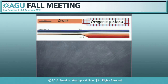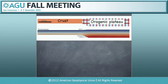Let's consider an orogenic plateau, 65 kilometers thick, adjacent to a foreland crust 35 to 40 kilometers thick, with a viscoplastic rheology. We are going to assume that that orogenic plateau is warm, with a temperature of the Moho at about 1100 Kelvin. We are interested to know what would happen to that plateau if we let it evolve.